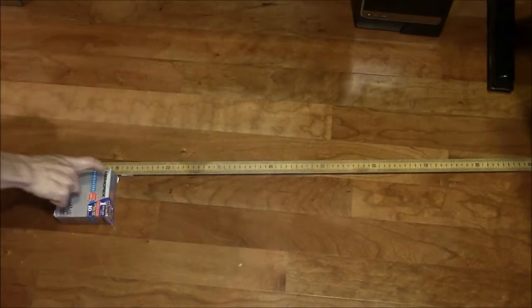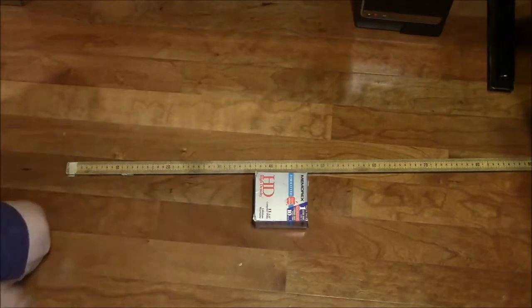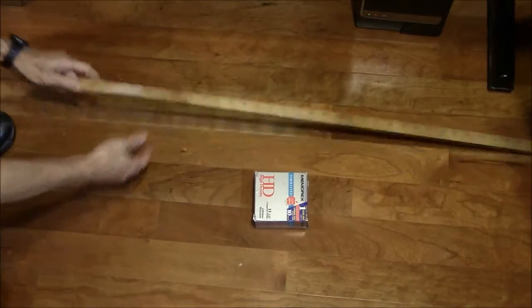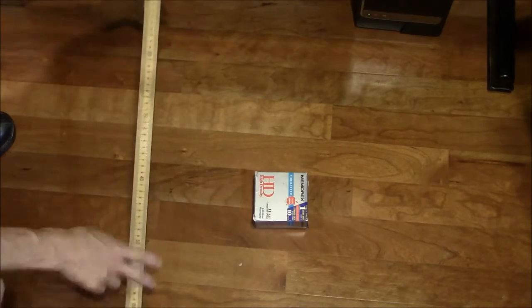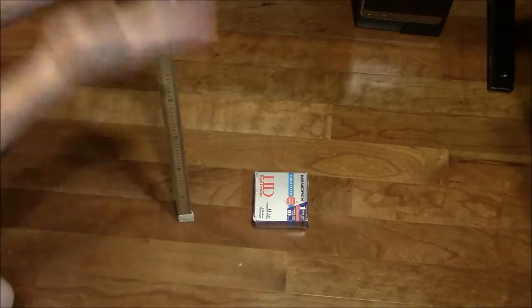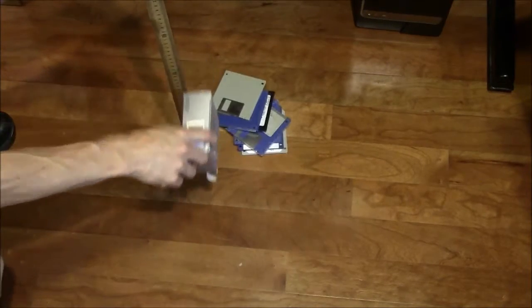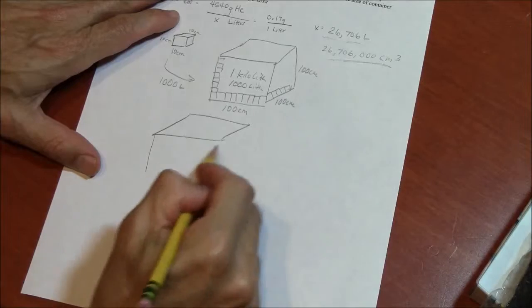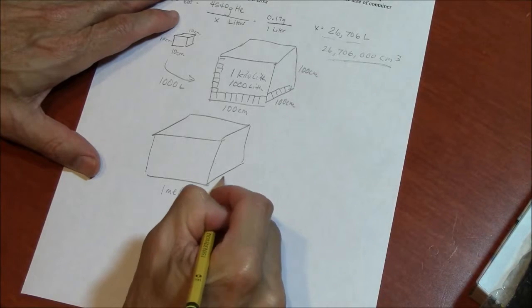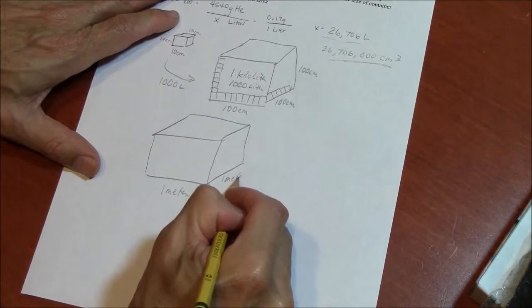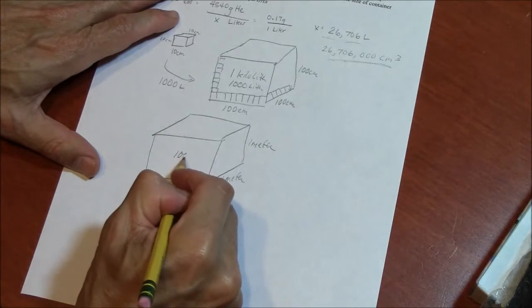So this is a 10 centimeter box here. And if you imagine 10 of them going across. And then 10 of them going in this direction. See? 10 in this direction. And then standing it straight up. And stacking them up. 10 up top of each other. One meter on a side is a cubic meter is 1,000 liters.